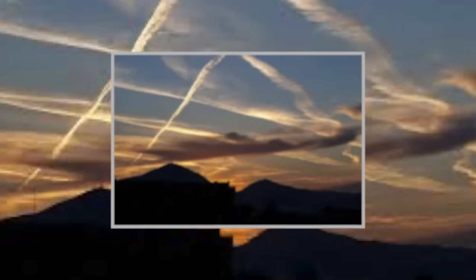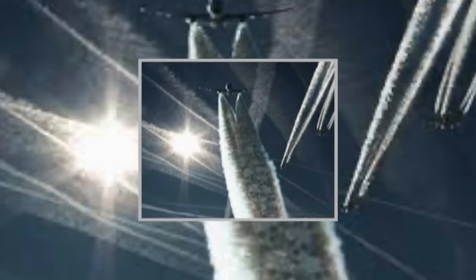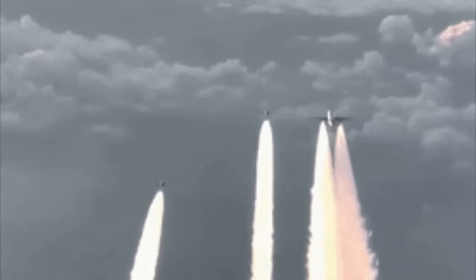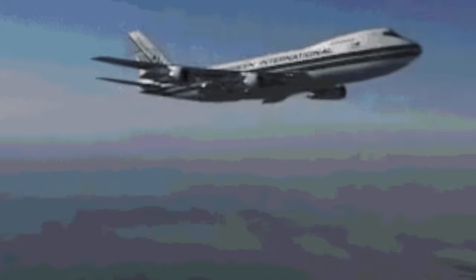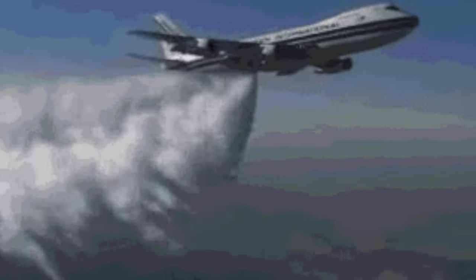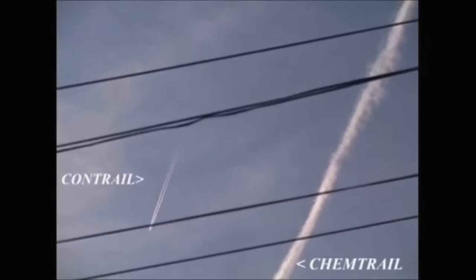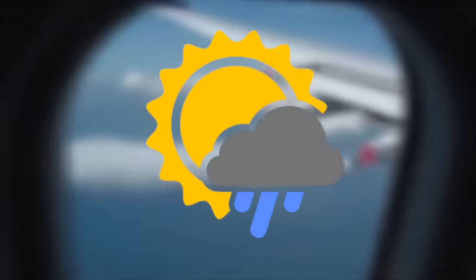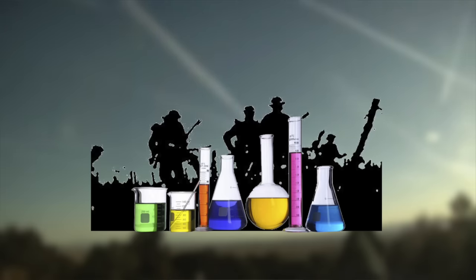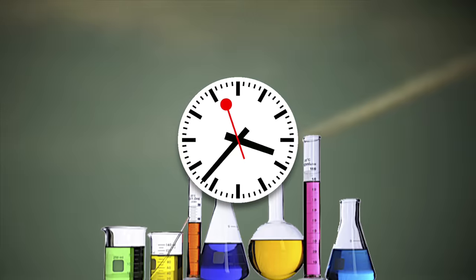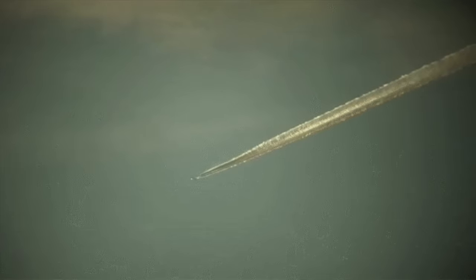The next topic is chemtrails. The chemtrail conspiracy theory holds that long-lasting condensation trails are chemtrails consisting of chemical or biological agents left in the sky by high-flying aircraft for nefarious purposes undisclosed to the general public. Believers say that while normal contrails dissipate relatively quickly, lingering chemtrails must contain additional substances. Those who subscribe to the theory speculate that the chemtrail release may be for changing the weather, mind control, population control, chemical warfare, or testing biological agents on a population. Believers also say that chemtrails cause respiratory illnesses and other health problems.